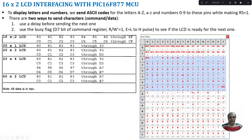Different types of LCDs have different address ranges. For 16x2, the first row goes from 80 to 8F and the second row from C0 to CF. For 20x1, it is 80 to 93. For 20x2, the first row is 80 to 93 and second row is C0 to D3. For 20x4, rows go 80–93, C0–D3, 94–A7, and D4–E7. For 40x2, each row can display 40 characters: first row 80 to A7, second row C0 to E7.